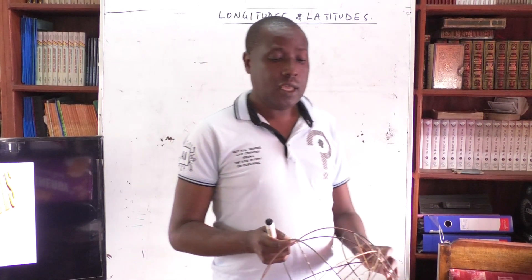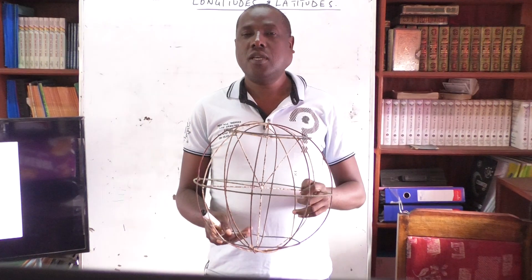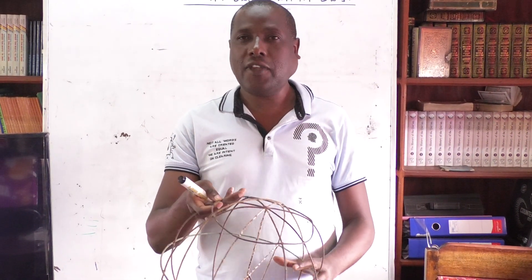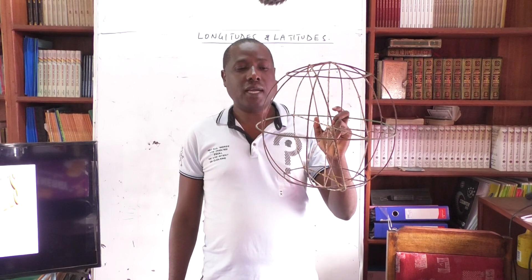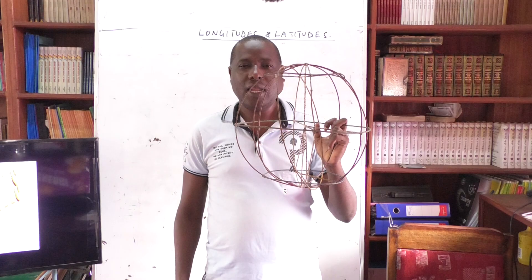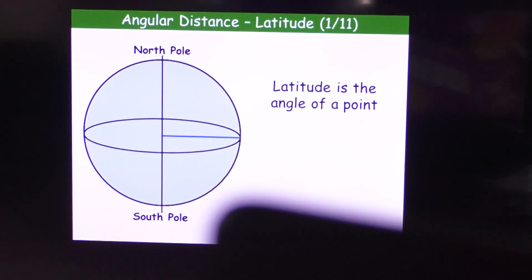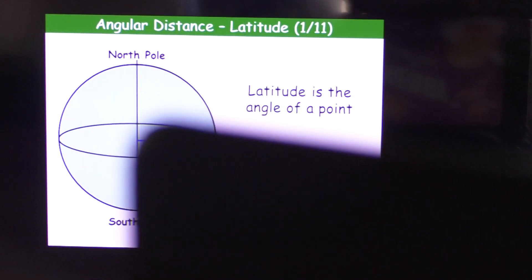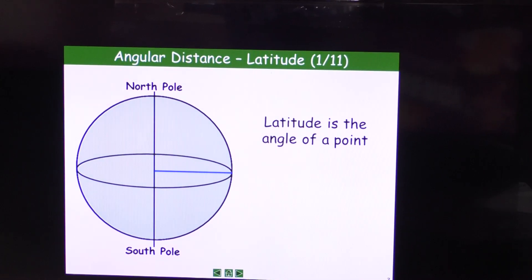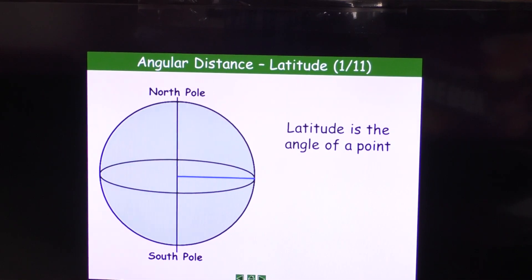To begin us off, here with me is the globe or the earth, which, as we are told, it is a perfect sphere. When you look at this, you will find some circles, or to you they may appear as lines. If you look at this diagram here, it's representing exactly what I'm holding, so there are some lines or circles that we'll find. Starting with this one here that is at the center — that is called the axis of the earth.